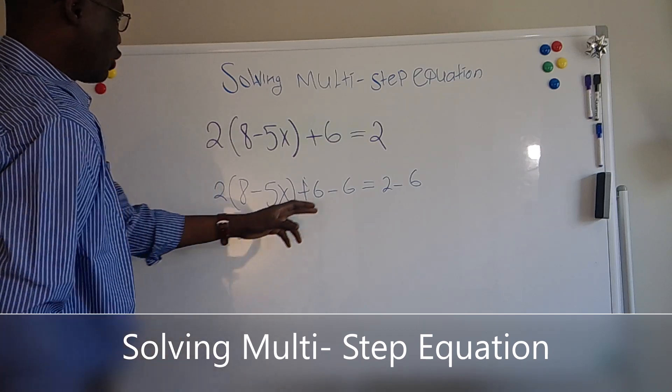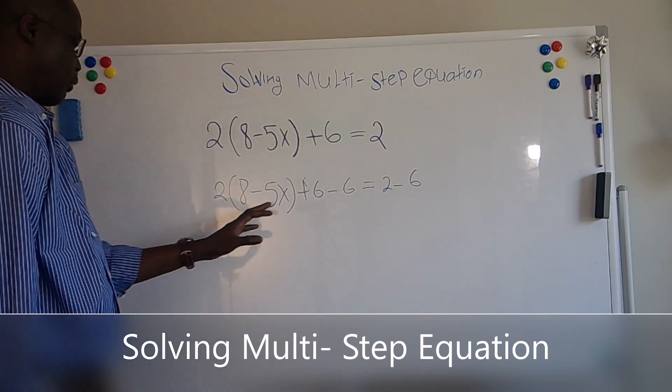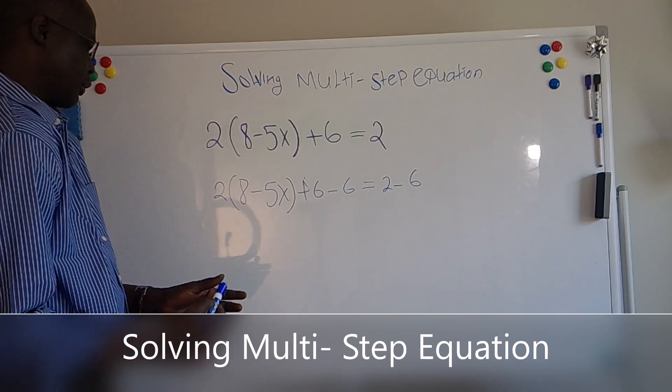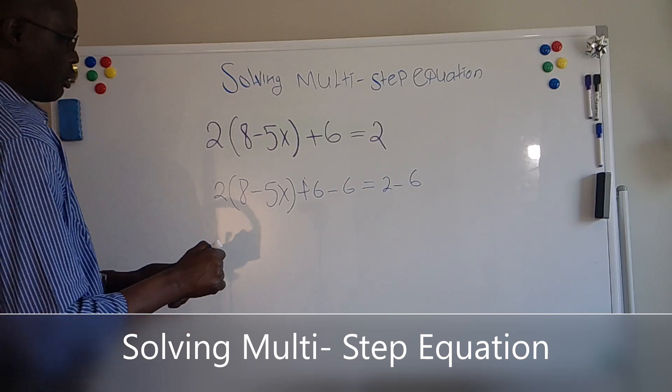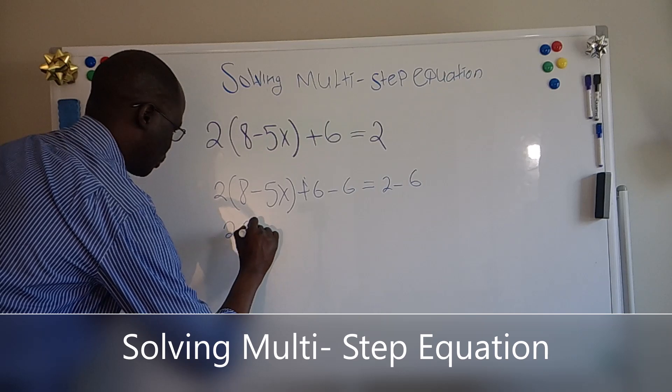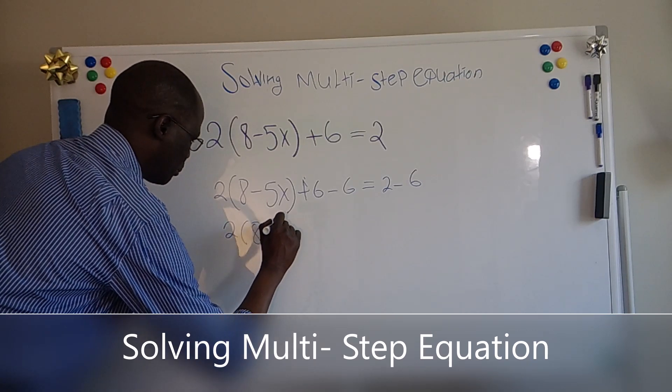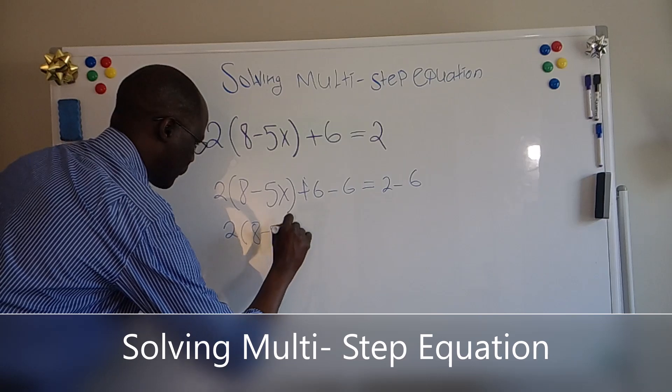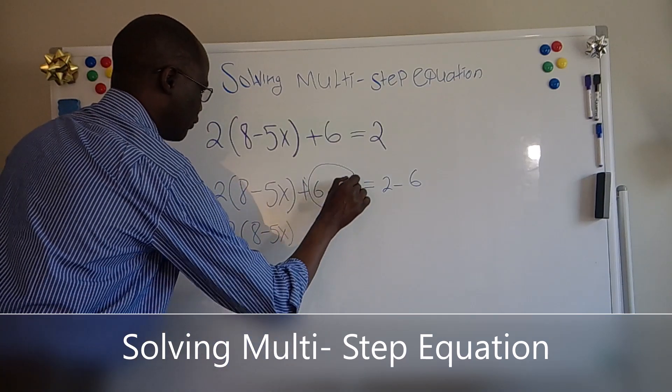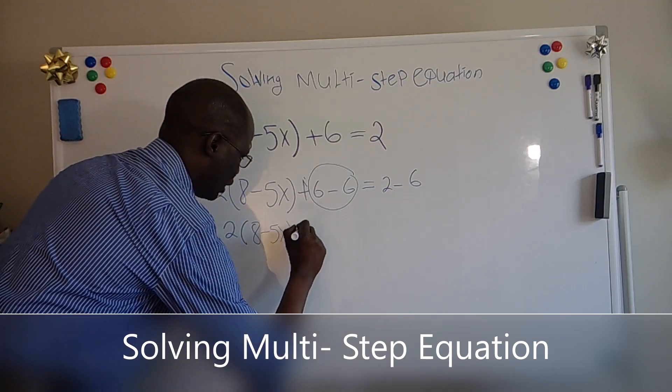Because what we're trying to do here is to put a number inside and then put a variable on the other side for us to find the value of X. To simplify what we have here, you still have 2 times the whole thing, 8 minus 5X. And because 6 became 0, that means it will equal...